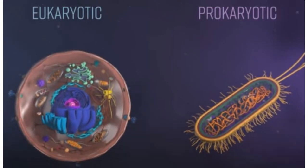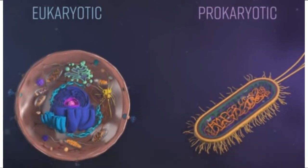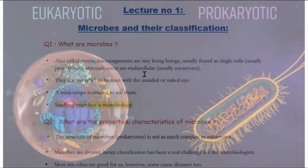Eukaryotic means multicellular — they are eukaryotes, which means multicellular. The microorganisms that are prokaryotes means they are only one cell. So microorganisms can be prokaryotes and eukaryotes — both are microbes.